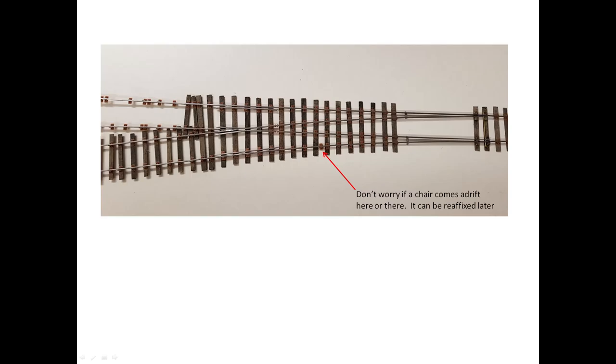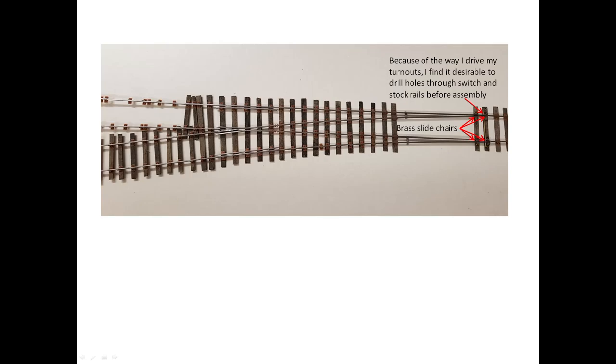I start by threading the check rail chairs onto the check rails, and then threading the appropriate chairs and the check rails onto the two stock rails. Because of the joggle, the chairs on the stock rails must be slid on from the heel end. If you don't joggle the stock rail, the chairs can be slid on from whichever end is more convenient. Because of the way I drive my turnouts, it's desirable, though not essential, to drill 0.75mm holes through switch and stock rails before I start assembly. Here you can see that the holes are aligned using a lacemaker's pin. I also solder two brass slide chairs to each stock rail as shown here. They will be attached to the sleepers with super glue.